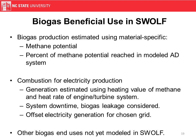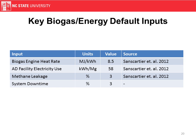We have default values for methane potential in the model. Our default setup sends biogas to an engine for combustion and electricity production, based on the heating value of methane and the heat rate for an engine-turbine system. It considers system downtime, some leakage, and we're offsetting electricity generation from a chosen grid. The other uses — upgrading biogas for pipeline or vehicle fuel — we don't yet model in SWOLF. Key inputs include the heat rate for the engine, the facility's electricity use for pumps and lighting, which is a key factor when we net electricity production and use.